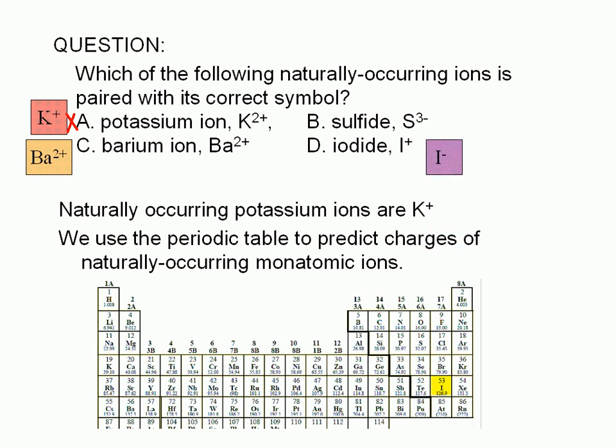Naturally occurring monatomic ions from the nonmetals of group 6A all have a charge of negative two. Sulfur is in this group. Therefore, sulfide will have a charge of negative two. And the correct answer is then C. Among the choices, only the barium ion is written with its correct formula.